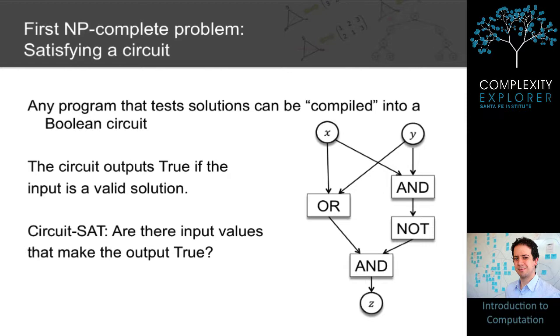To prove this, we need to prove two things. First, that it's in NP, and second, that any problem in NP can be reduced to it. To see that it's in NP, notice that if I give you a potential input that makes the output true, it's very easy to check that the output is true. You simply simulate the circuit. So circuit-sat is certainly in NP. And we've already given the proof that any problem in NP can be reduced to it. So circuit-sat is NP-complete.